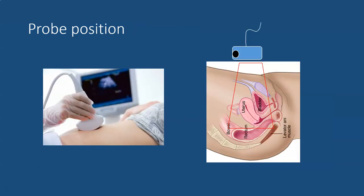The probe will be placed just above the pubic symphysis with the indicator towards the patient's head. On our screen we'll be able to see the underlying organs, with the most anterior being the bladder, followed by the uterus, the cul-de-sac, and perhaps the rectum.